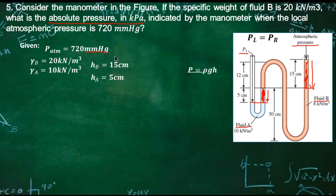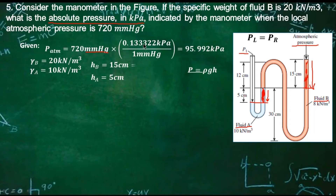We need to convert 720 mmHg to kilopascal. Since 1 millimeter of mercury is equal to 0.13333322 kilopascal, multiplying gives 95.992 kilopascal. Now it's in kilopascal, so it's uniform. We also convert centimeters to meters: 0.05 meter and 0.15 meter.